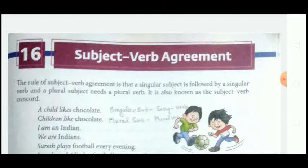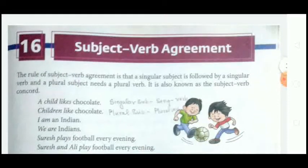Now let us understand the chapter: Subject and Verb Agreement. The rule is that a singular subject is followed by a singular verb, and a plural subject needs a plural verb. This is also known as subject and verb concord. The main and important rule is that if the subject is singular, the verb will also be singular, and if the subject is plural, the verb also needs to be plural.